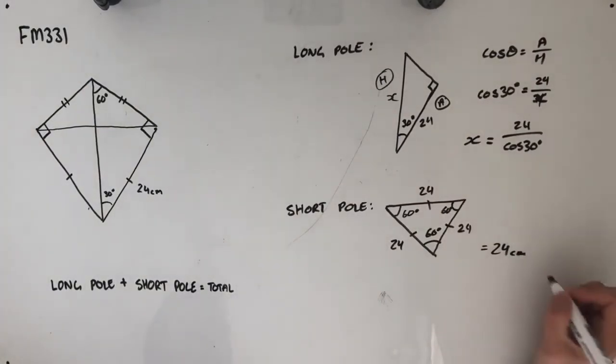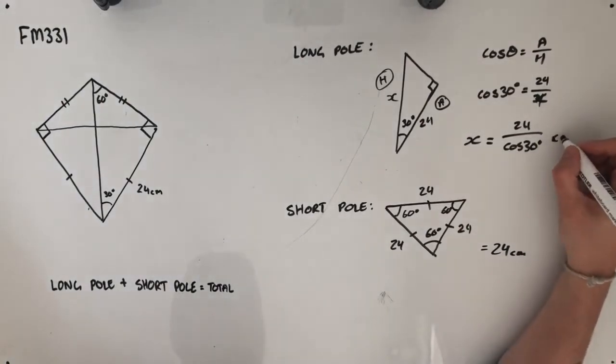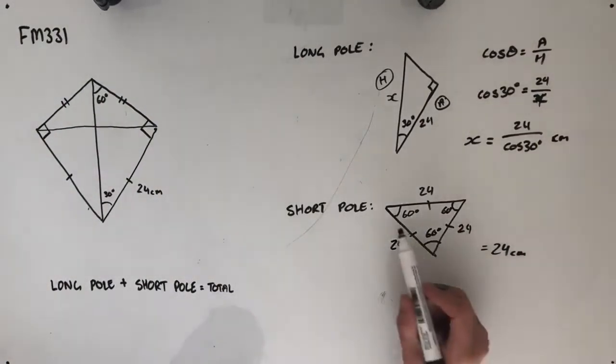is equal to 24 centimeters. So we have our long pole and short pole lengths.